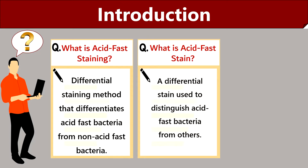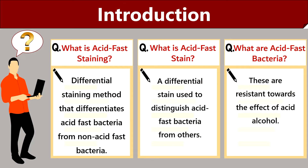Acid fast staining is a type of differential staining used to check the acid fastness of bacteria. It differentiates acid fast bacteria like Mycobacterium and Nocardia species from non-acid fast bacteria like E. coli and Staphylococcus aureus.